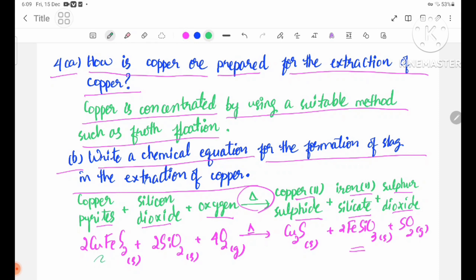Copper pyrite (FeS2) plus silicon dioxide, oxygen, and heat produces copper(I) sulfide (Cu2S), iron silicate slag, and sulfur dioxide gas.